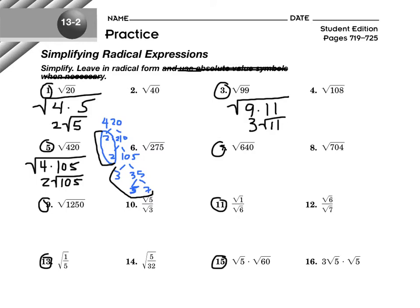Factors of 640 that are perfect squares — instead of prime factorizing, let's just think of factors. It came to me pretty quickly: 64 and 10. So 64 times 10 — I can take the square root of 64, I can't take the square root of 10. The answer is 8 root 10.